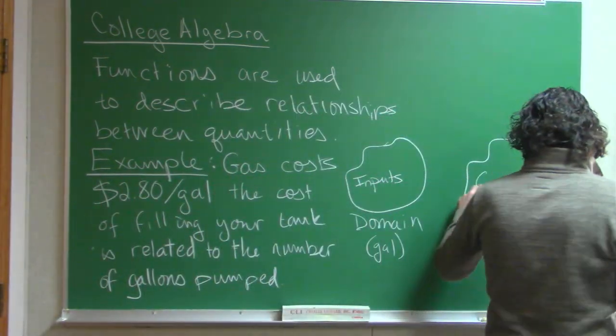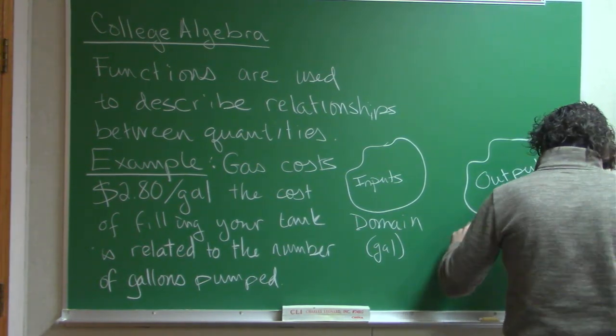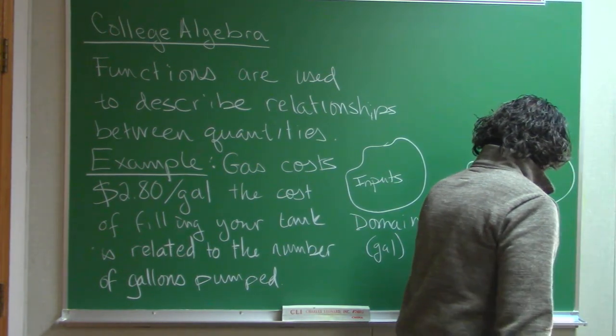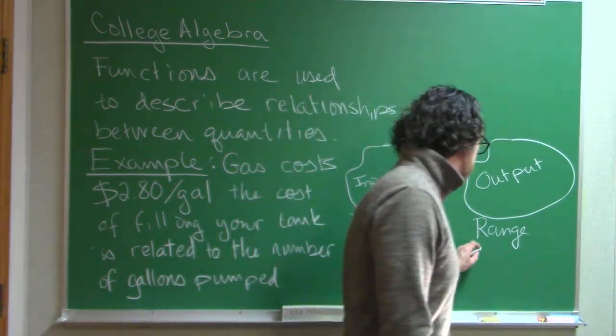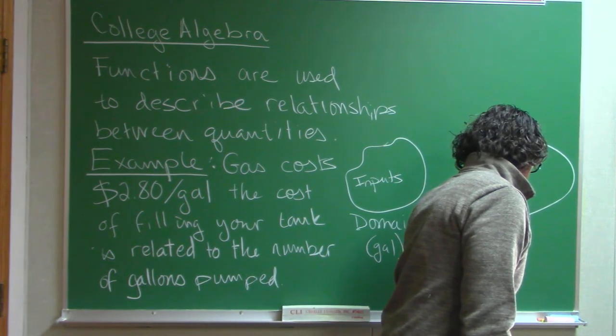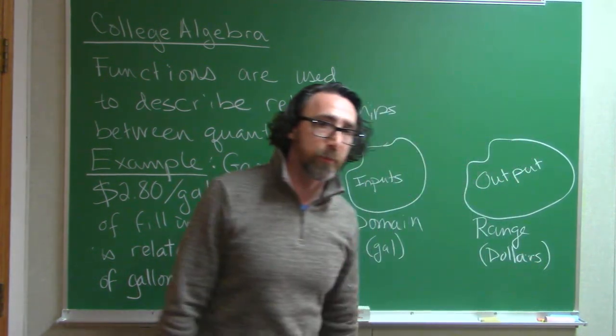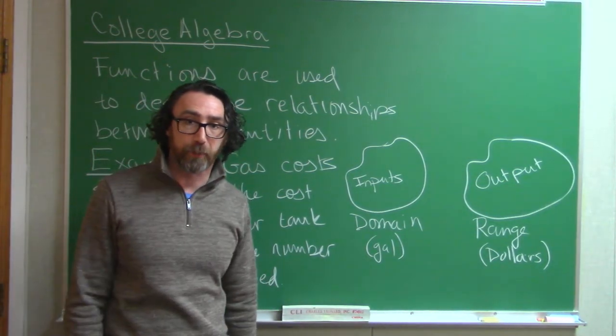You also have a set of output values. The fancy name for the set of output values is the range of the function. In this case, we are relating the number of gallons pumped to the cost in dollars.